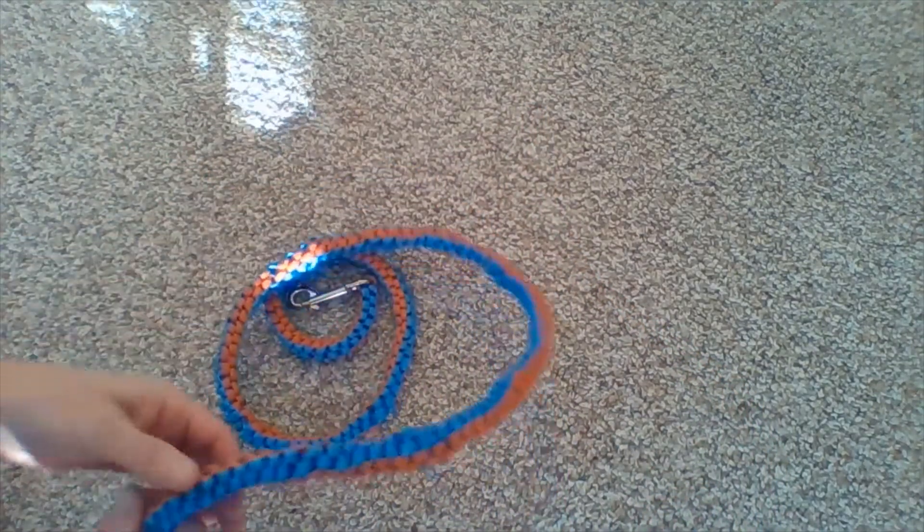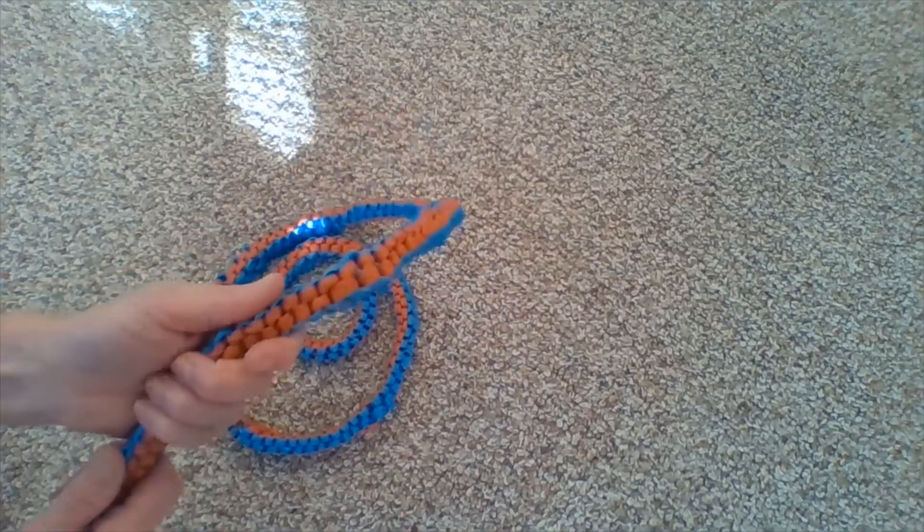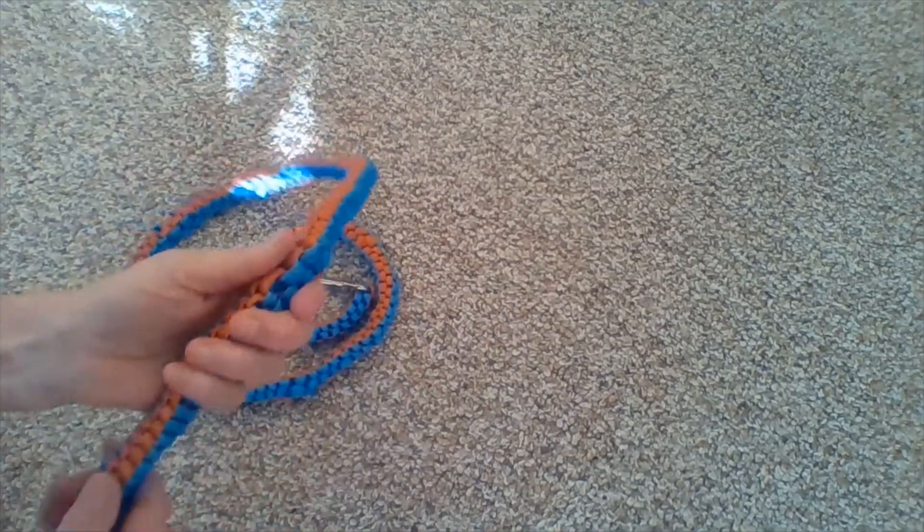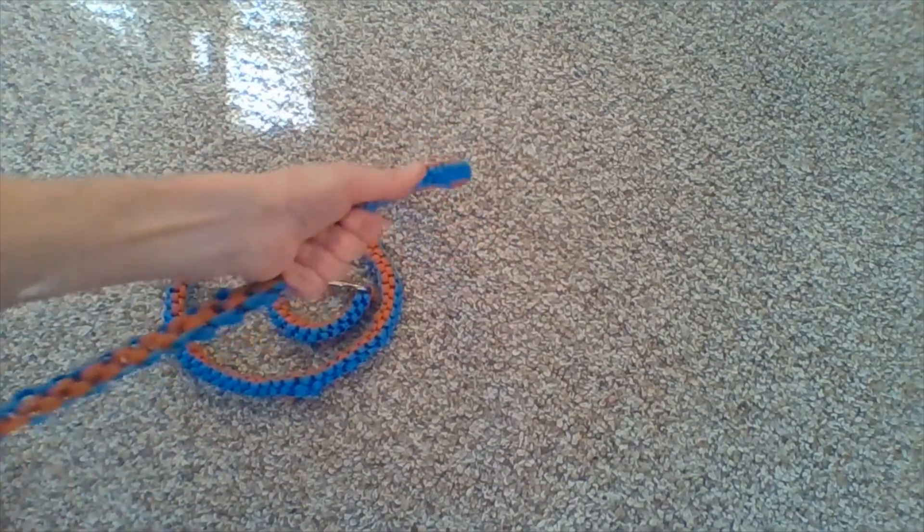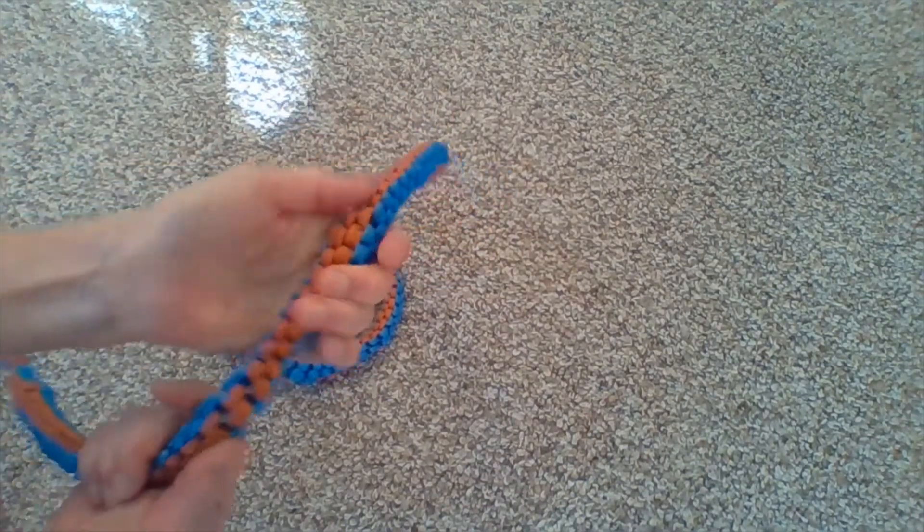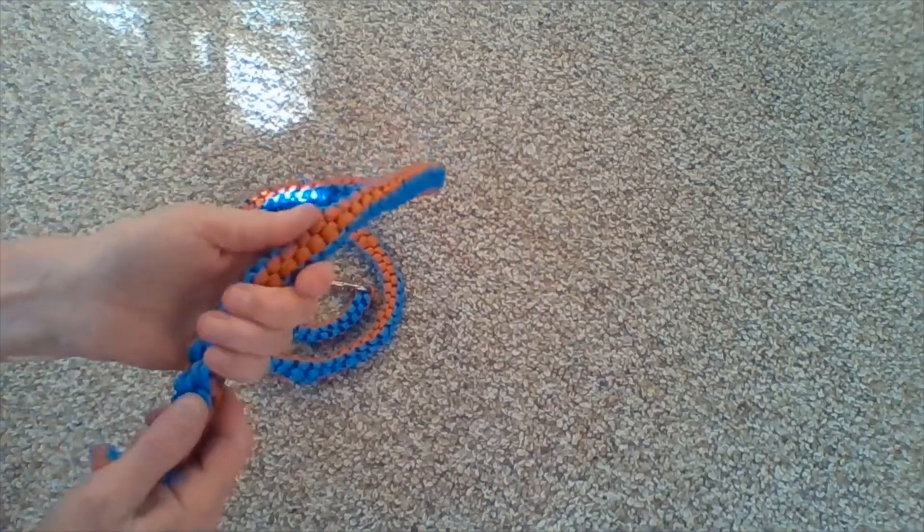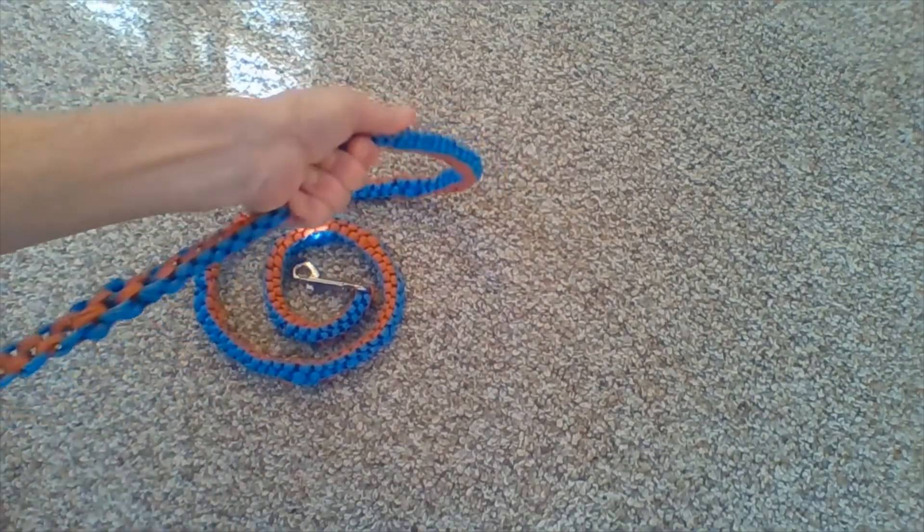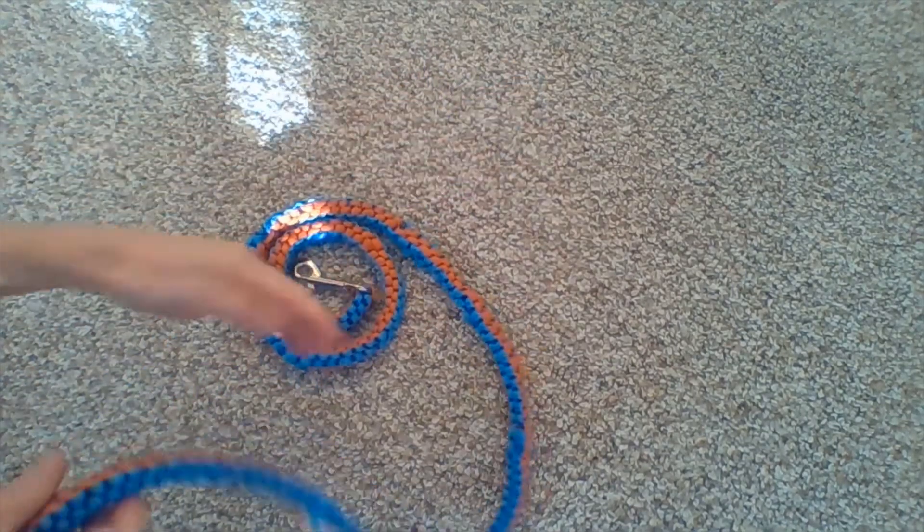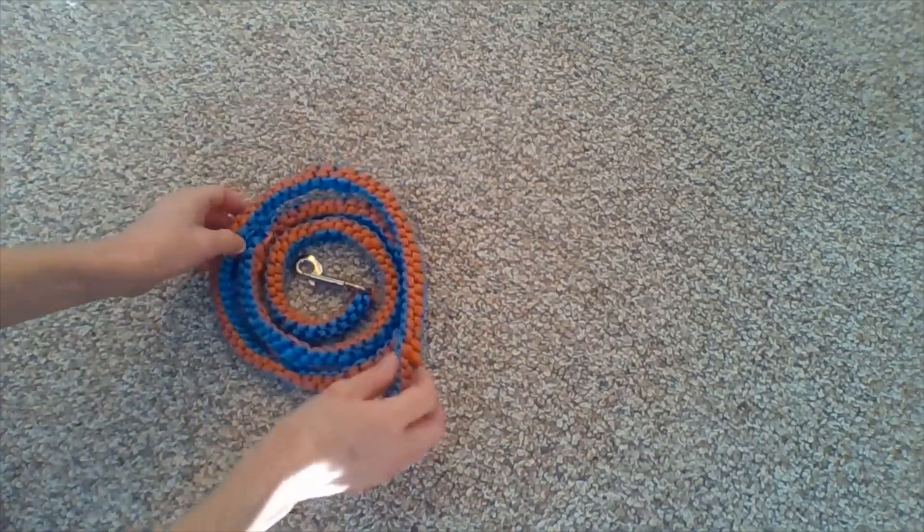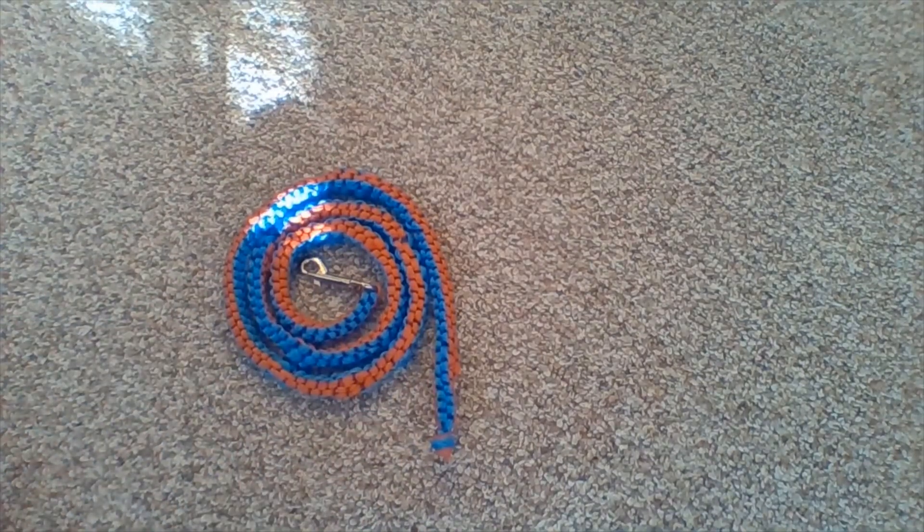So this, the lanyard stitch, gives the rein some stretch to it. But it is really tight even at the places where I added more twine. You can pull and it's not going to come apart. All right, thank you for this challenge and have fun.